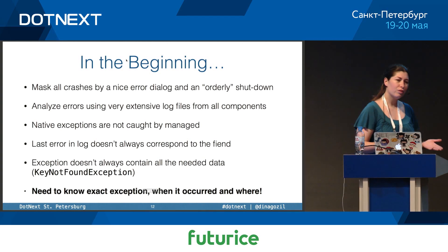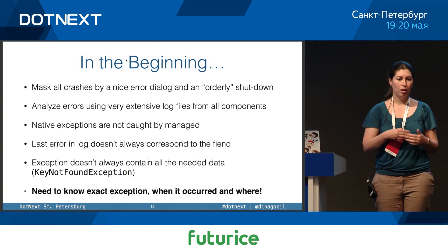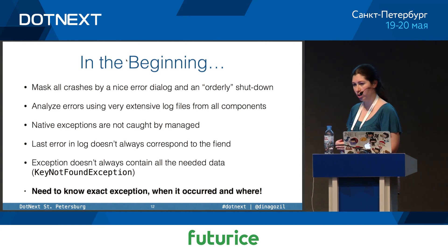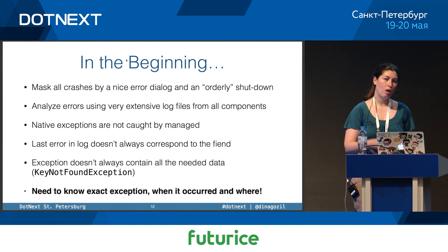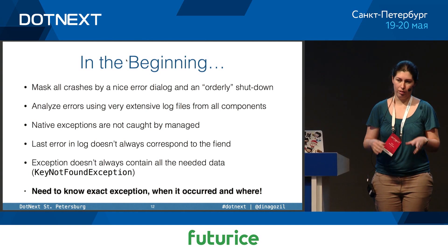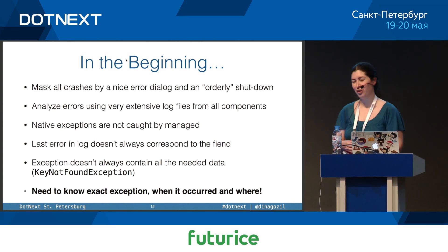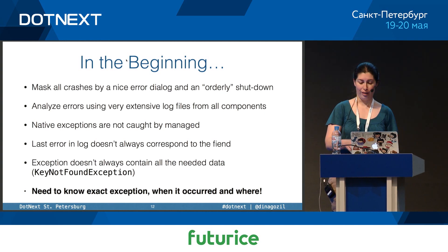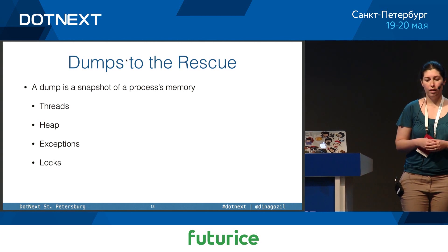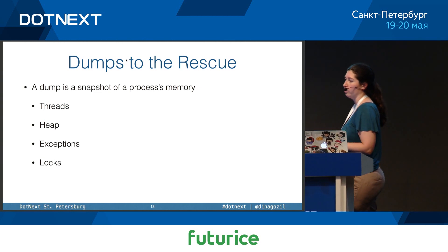So what's the conclusion from all of this? If we want to be able to handle and fix all of the crashes that we have, we need exact information about the exception that happened, we need to know where in the code it happened, when it happened, and what was going on around the system when it happened. Luckily for us, and that's why we're here, there's an answer to all of this, and these are dump files.